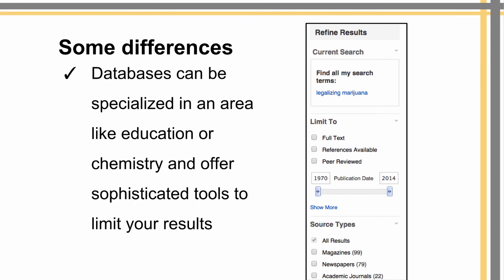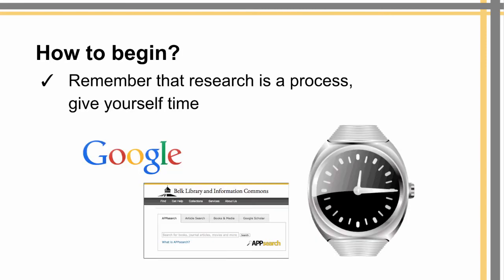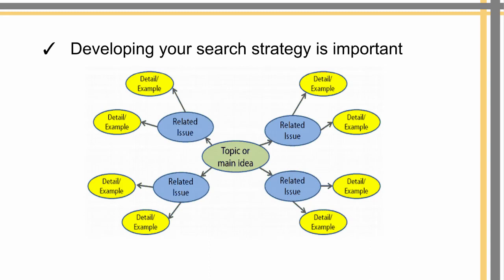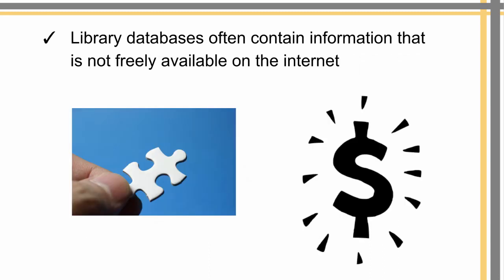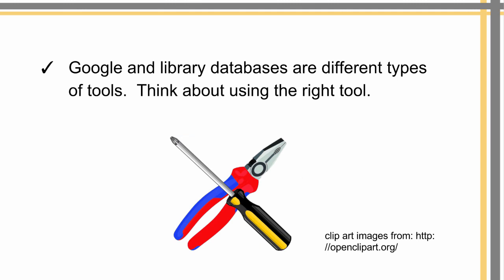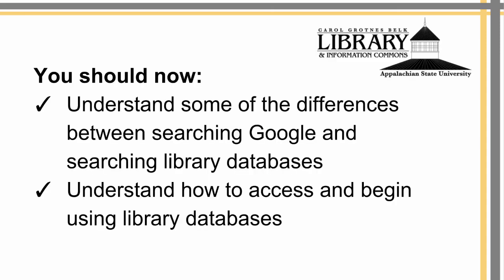Databases can be specialized in an area like education or chemistry and offer sophisticated tools to help limit your results. Where do you begin? Remember that research is a process — give yourself time. Developing your search strategy is important. Library databases often contain information that is not freely available on the internet. Google and library databases are different types of tools, so think about using the right tools. You should now understand some differences between searching Google and searching library databases, and how to access and begin using library databases.